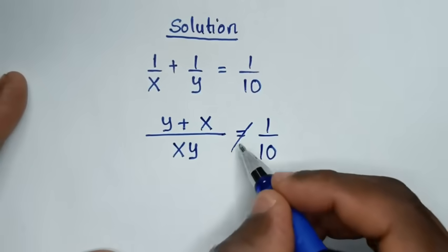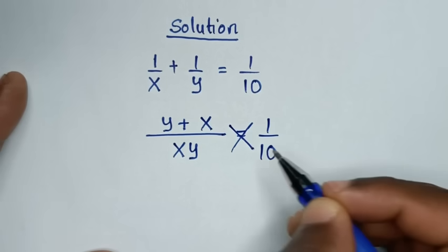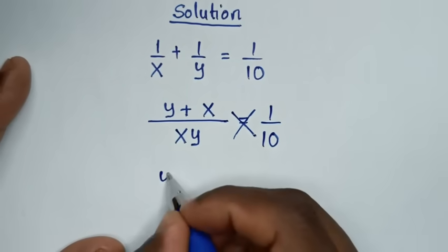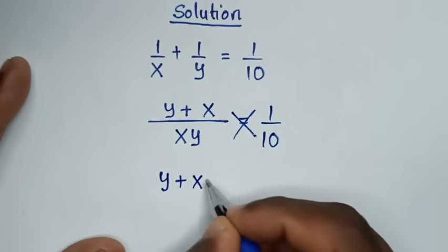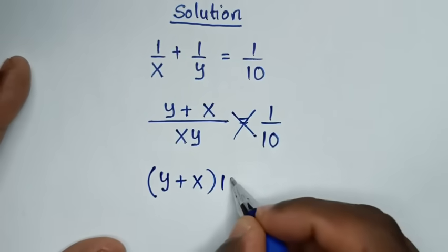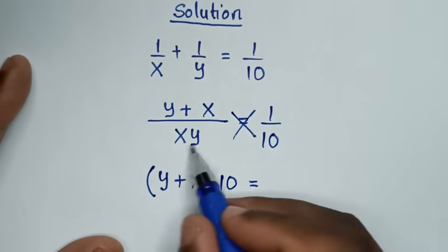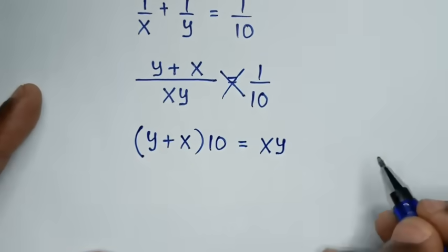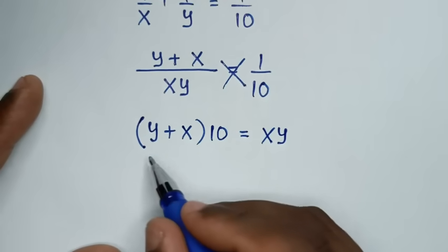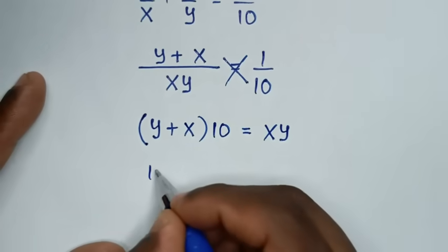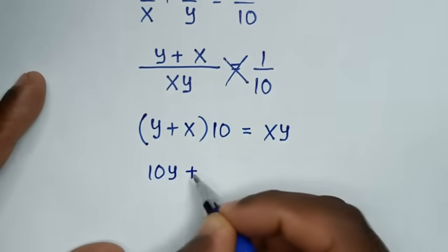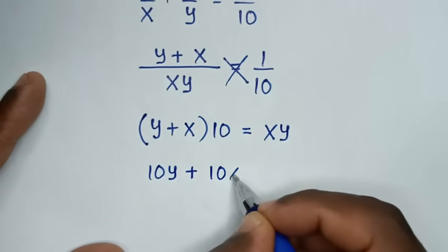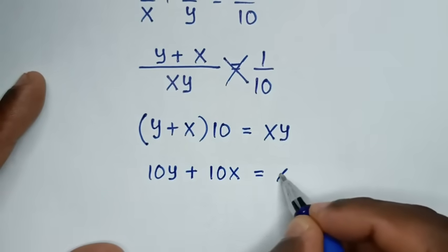The next step is to cross multiply. So y plus x times 10 equals xy times 1, which is xy. Expanding the bracket: y times 10 is 10y, plus x times 10 is 10x, equals xy.